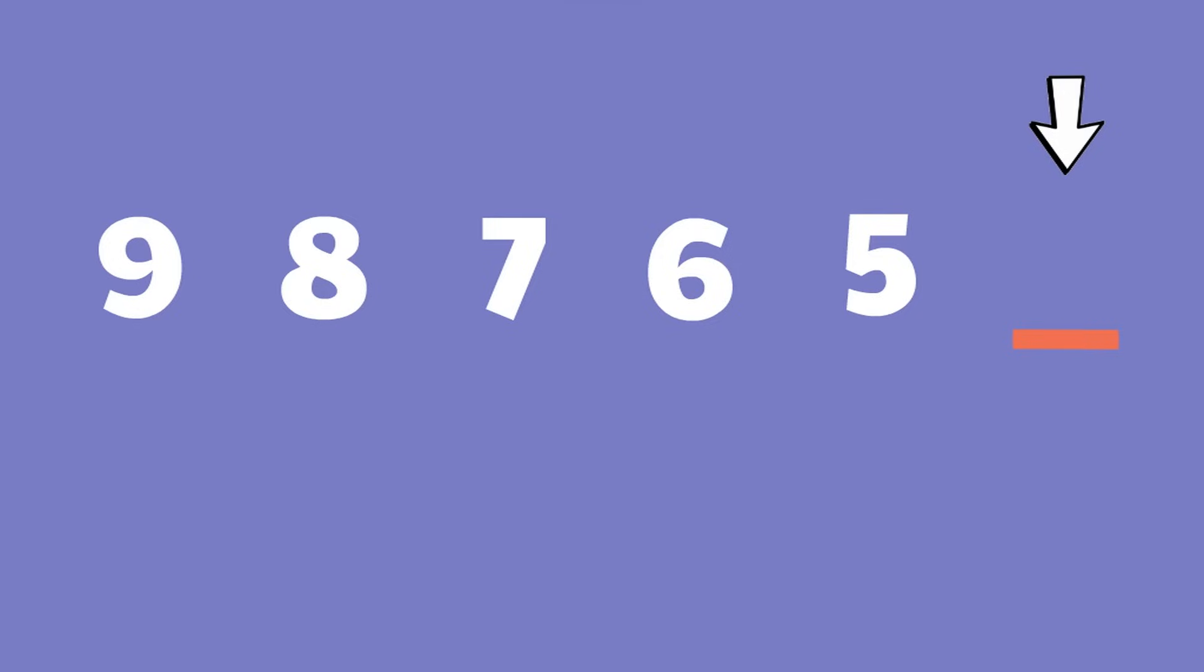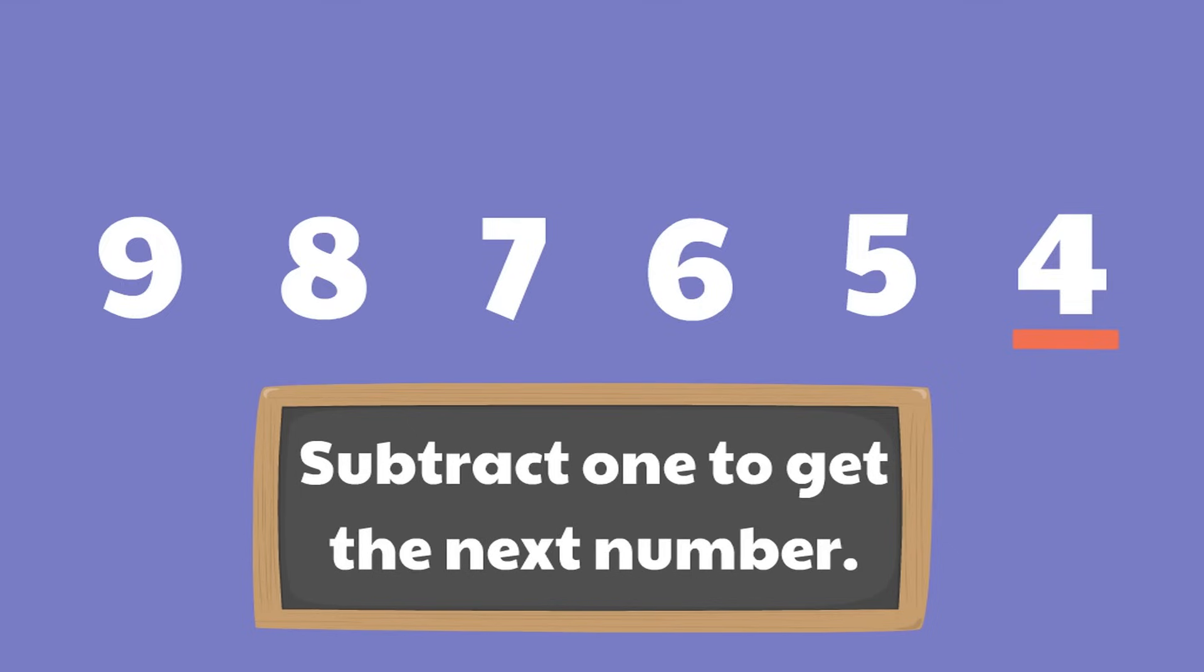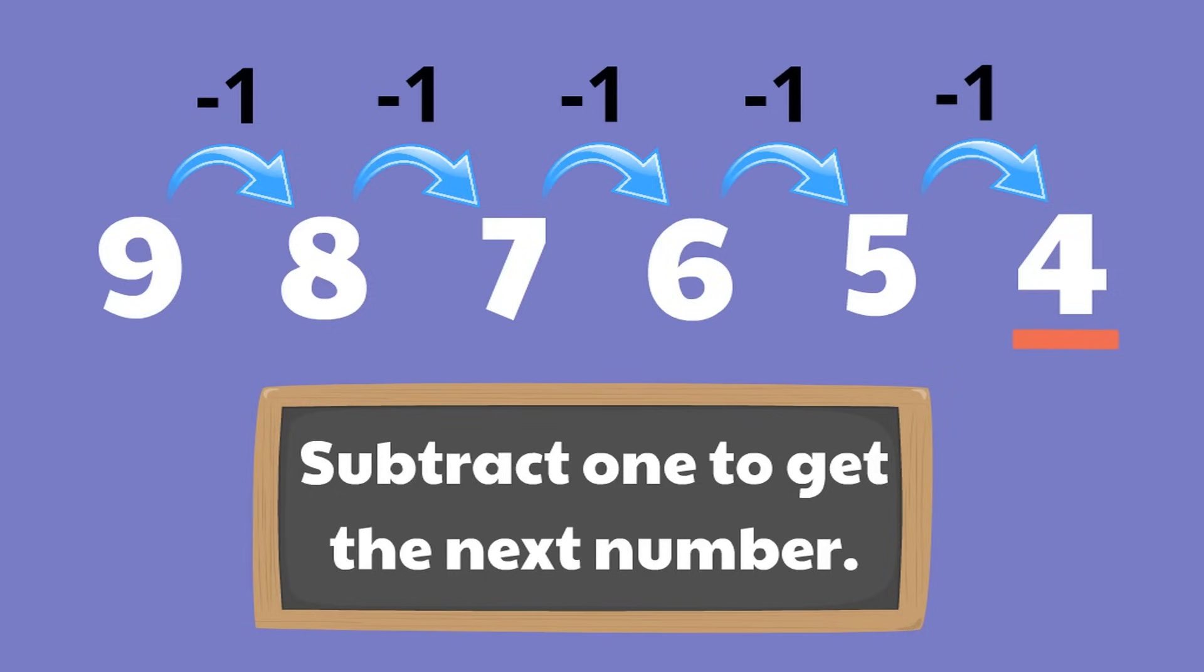Yep, four. Great job. How do we know that this missing number is the number four? Well, what rule did you notice the pattern was following? Yes, subtract one to get the next number. So the first number is nine, and the next number is one less than nine, eight. Then you subtract one to get seven. You subtract one to get six. You subtract one to get five, and finally you subtract one from five to get our answer, four.